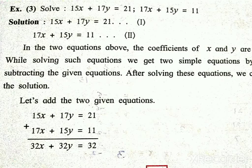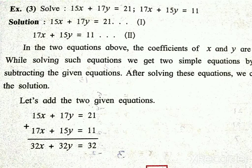Now, let us solve this type of simultaneous equations in two variables. Students, in your book on page number 2, there are three solved examples. The first two examples you can see yourself — they are very simple. We are going to see solved example number third: 15x plus 17y is equal to 21 — equation 1; 17x plus 15y is equal to 11 — equation 2.